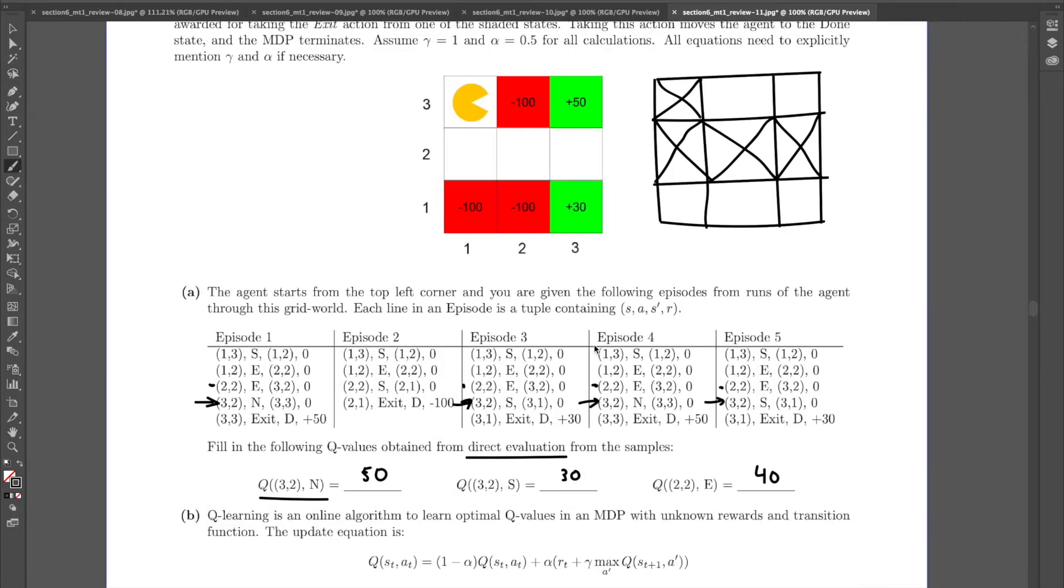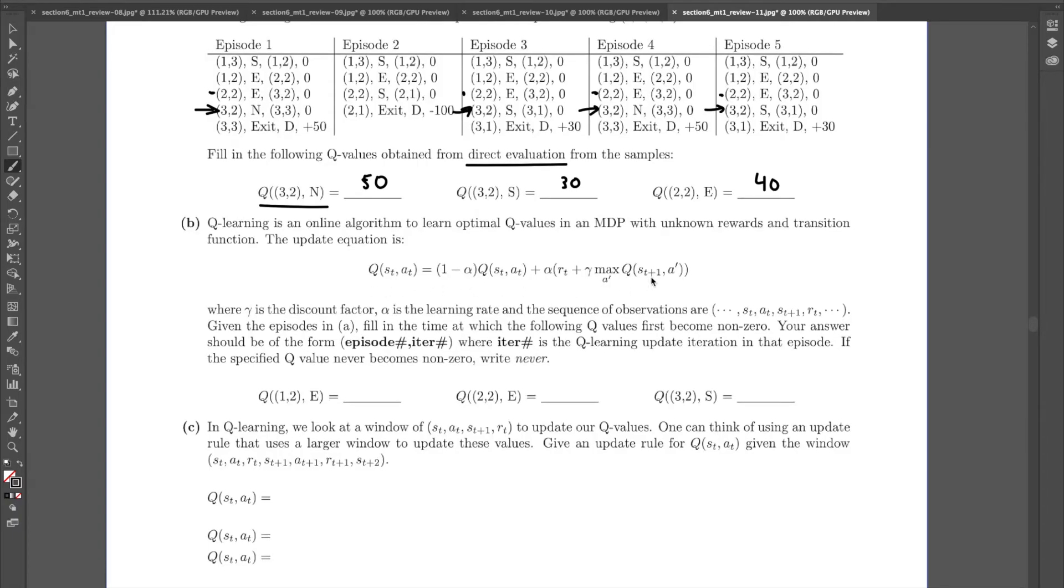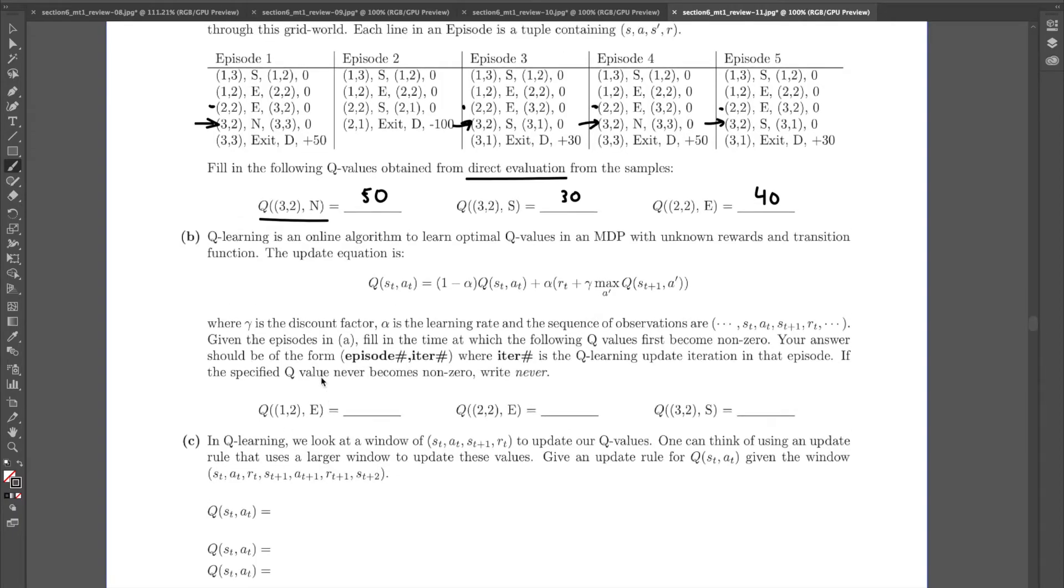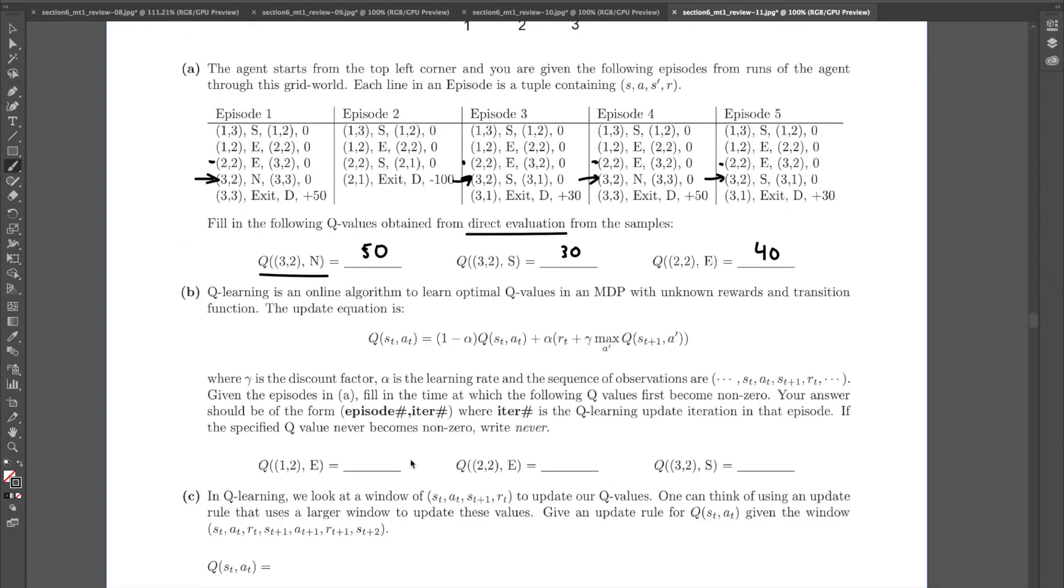Okay, so now let's work on part B. In part B, so we're provided the Q-learning update equation over here. And now the aim is to not quite find the Q values over here. But rather, what we're trying to do is we're trying to identify what is the point at which each of these values becomes non-zero. So at what point during Q-learning, that is, in which episode and which iteration within that episode, does each of these values become non-negative?